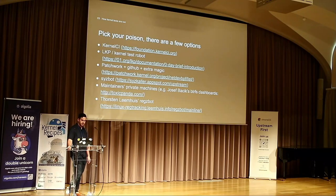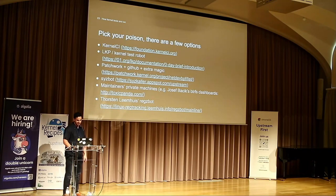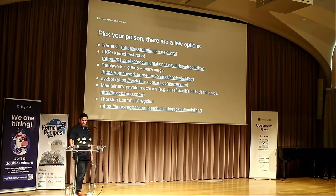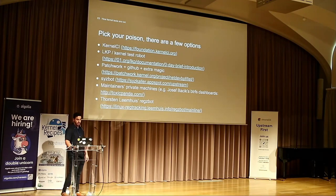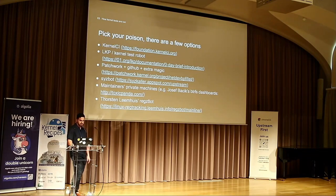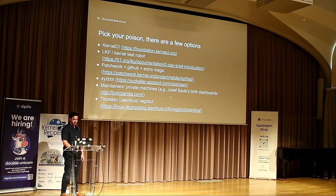We have Patchwork, which I'm sure a lot of the maintainers in the room use. The BPF team at Meta and the networking folks there use this for running CI, as we'll see. Sysbot, part of Google, fuzzes the kernel. And then we also have maintainers' private machines — like Joseph Bacik, who's the ButterFS maintainer, where they have their own setup and their own way of showing results and keeping track of how their subsystems are doing. Thorsten also talked about Regzbot, which is an issue tracker, and we're trying to figure out how that could be used to track problems in the kernel.